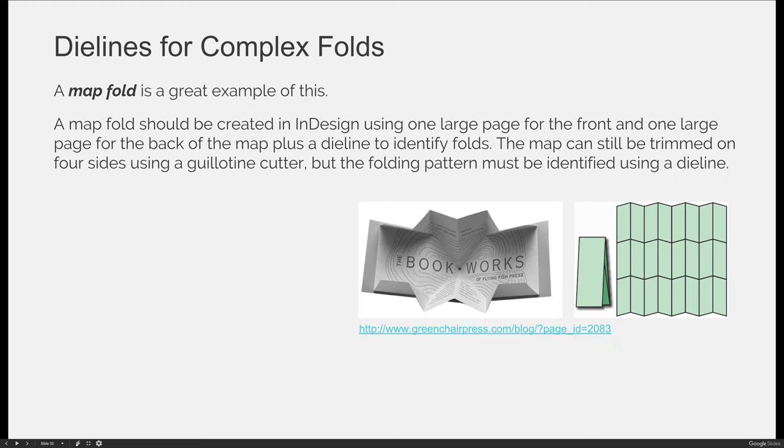A map fold is a great example of this. A map fold should be created in InDesign using one large page for the front and one large page for the back — so your InDesign document would just have two pages. Then you add a dye line to identify where the product needs to fold, whether you're using a folding machine or you want to dye score it — pressing a flat blade against the paper to create an indent to make it easier to fold. The map can still be trimmed on four sides using the guillotine cutter, but the folding pattern must be identified using a dye line.